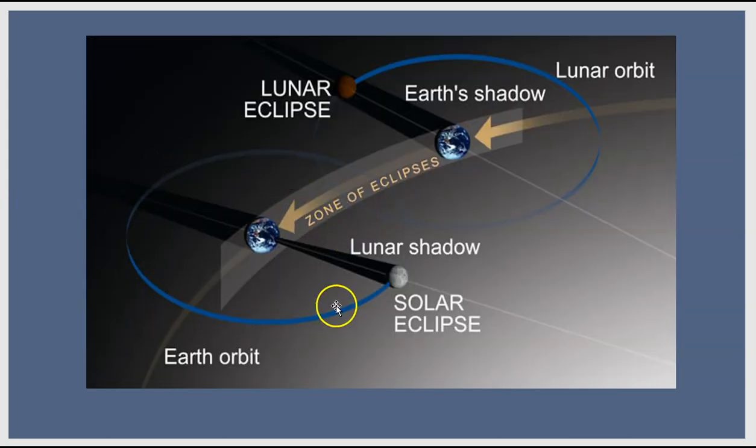The moon is between the Earth and the sun over here. And so the shadow of the moon is cast down onto the Earth. So if you were at that location on Earth, then you would see the solar eclipse.